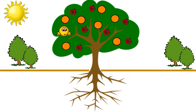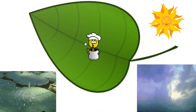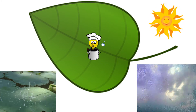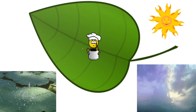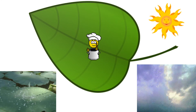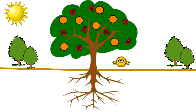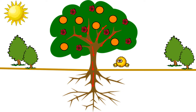Leaves. Leaves are the place where food for the plant is cooked. It uses sunlight, air, and water to prepare its food. After preparing food, the leaves pass the food to the stem, which in turn passes it to the root.